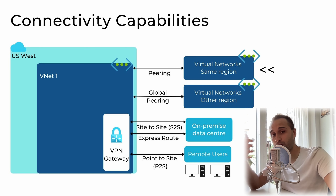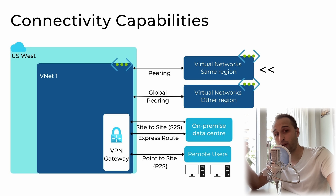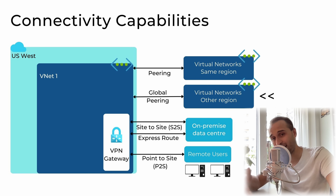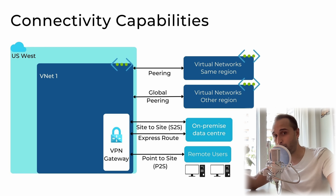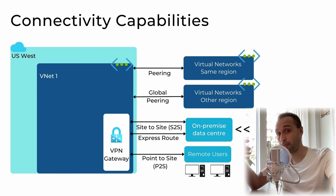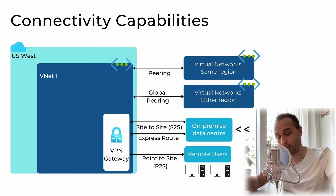Peering can be done in two ways: regional peering and global peering. Regional peering enables connectivity between different virtual networks within the same Azure region. Global peering extends connectivity beyond Azure regions, enabling communication between VNets in many different Azure regions across the globe. We should also talk about VPN connections. In some scenarios, we need to establish a secure connection between our on-premise network and Azure virtual networks — this is where site-to-site VPN comes in. Site-to-site VPN establishes an encrypted tunnel over the public internet, connecting our on-premise network to an Azure virtual network.